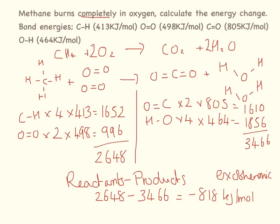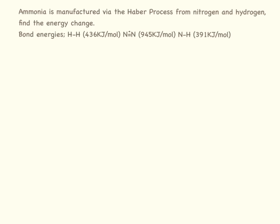In this question we're going to look at the energy change when ammonia is manufactured by the Haber process. First we work out the equation: H₂ + N₂ → NH₃, but we need to balance it. We have two nitrogens on the left, so we need 2NH₃ on the right. That gives us six hydrogens on the right, so we need 3H₂ on the left. The balanced equation is: 3H₂ + N₂ ⇌ 2NH₃.